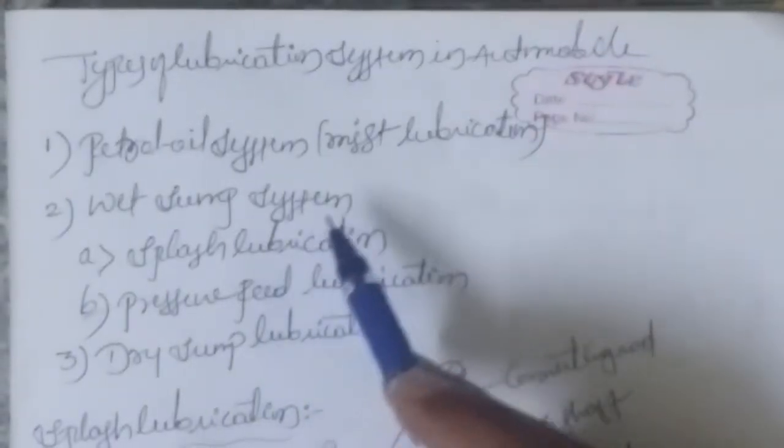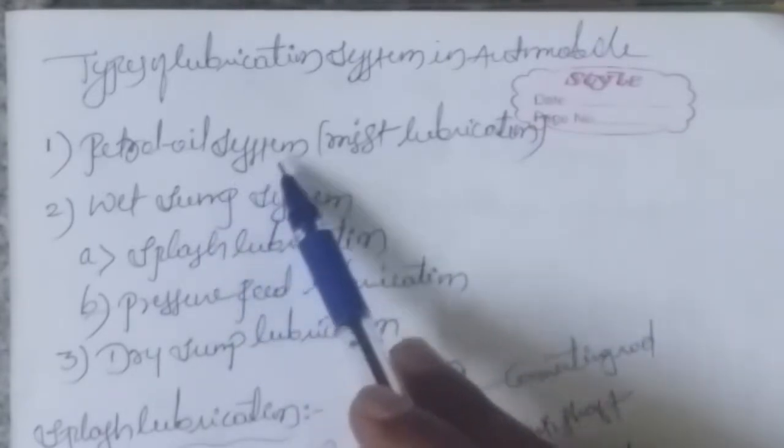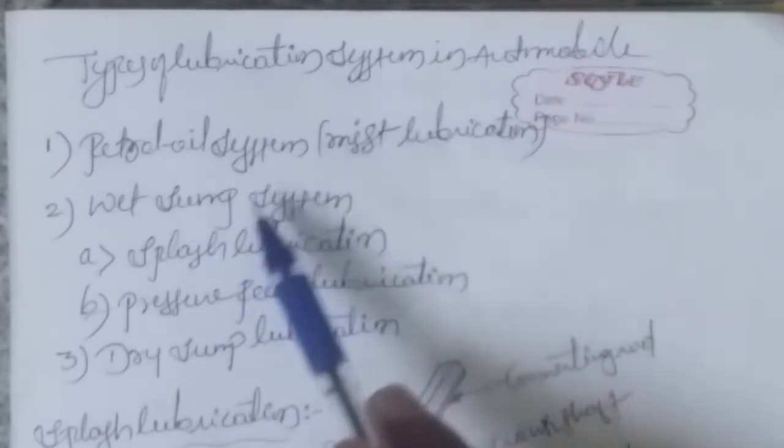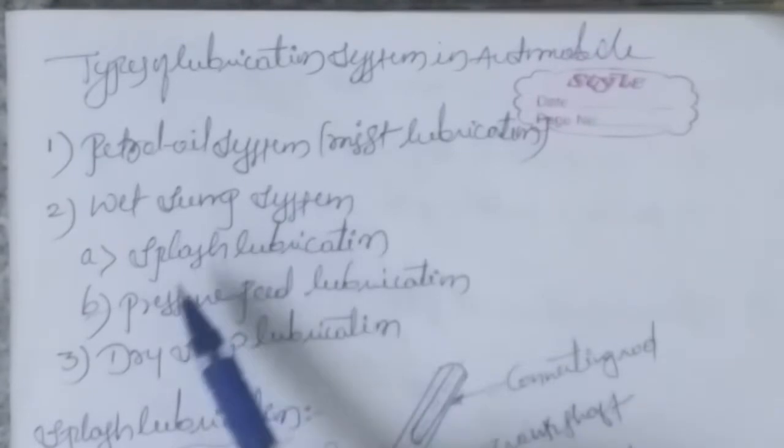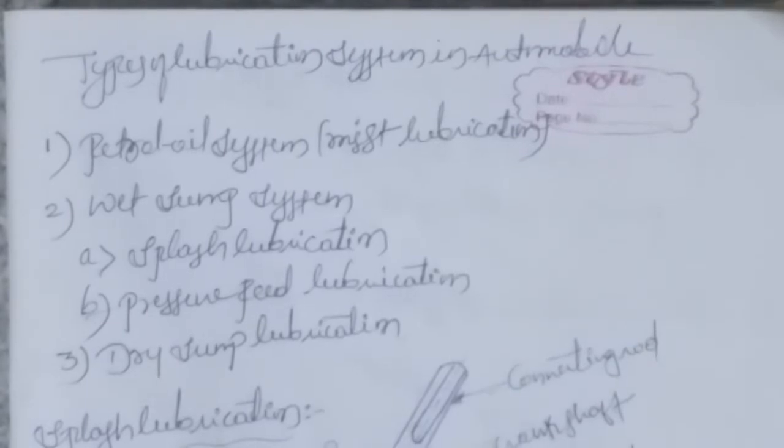Hi friends, today we are discussing types of lubrication systems used in automobiles: petrol oil system or mist lubrication system, wet sump lubrication system, splash lubrication system, pressure feed lubrication system, and dry sump lubrication system.